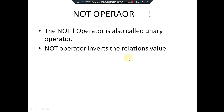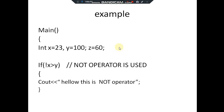The NOT operator, also called the unary operator, inverts the relational value — it basically inverses your logic. Here x is equal to 23 and y is equal to 100. Since x is not greater than y, the NOT operator inverts this: because the relation (x > y) is false, the NOT operator makes it true and executes the statement. So 'hello' is printed — the NOT operator is just inverting the logic.